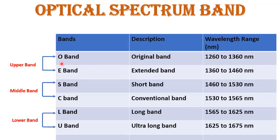The upper band consists of O band and E band. O stands for original band and E stands for extended band. The O band wavelength range is 1260 nm to 1360 nm, and the E band range is 1360 nm to 1460 nm. These two bands have very low losses and zero dispersion loss, which is why they are used for single mode fiber.